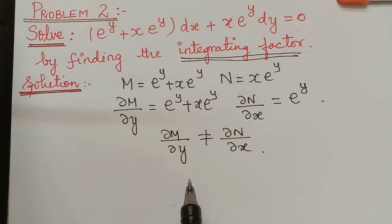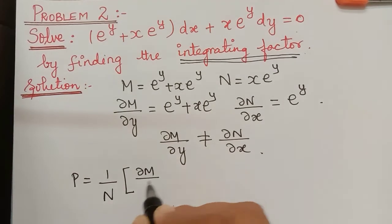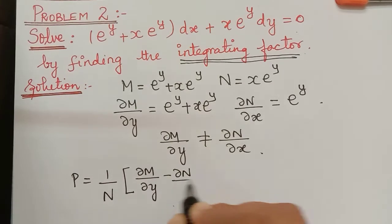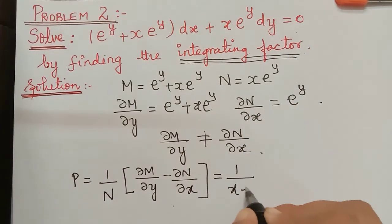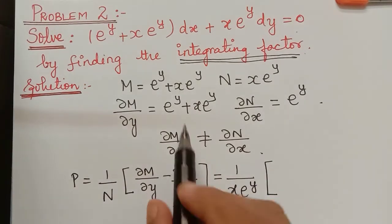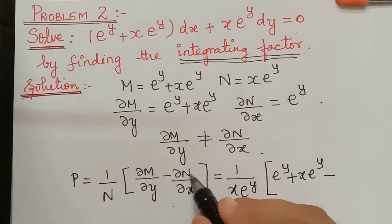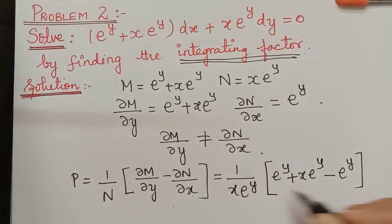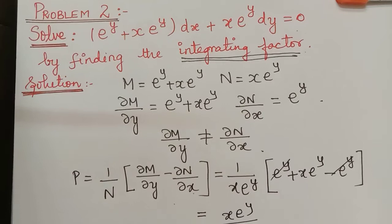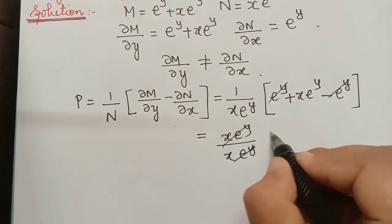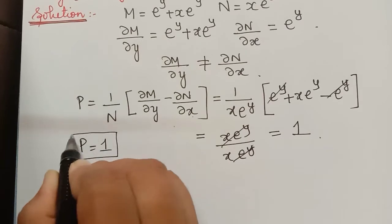For the integrating factor, we check rule number 1: P = (1/N)(∂M/∂y − ∂N/∂x). So P = (1/(x·e^y)) × [(e^y + x·e^y) − e^y]. These two e^y terms cancel, leaving x·e^y divided by x·e^y, so P = 1. Since P = 1, it is independent of y.